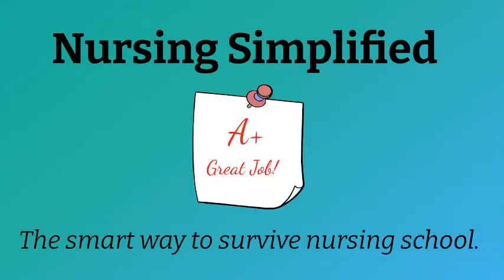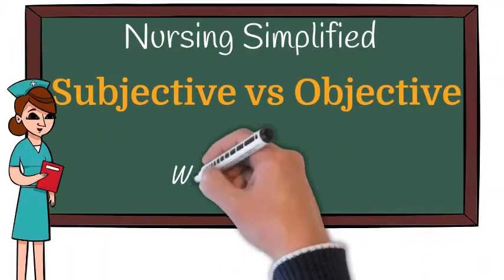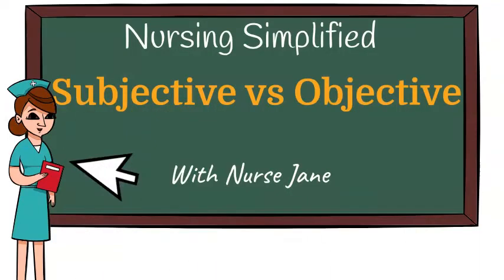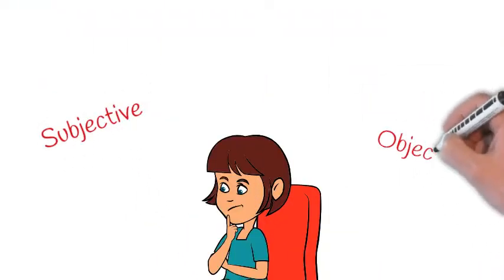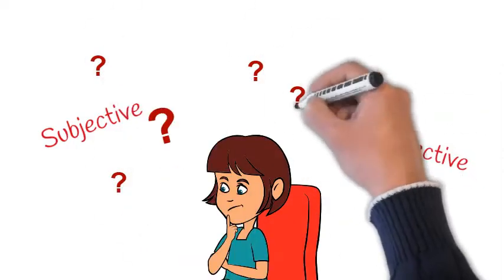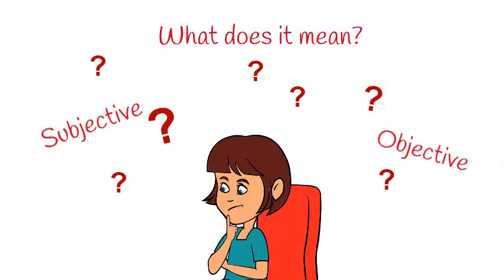Welcome to Nursing Simplified, the smart way to survive nursing school. Here at Nursing Simplified, we like to break down topics in a simple and easy-to-remember format. In today's episode, we're talking about the difference between subjective and objective data. Do you get confused about the difference between subjective and objective data? What's the difference between a sign and a symptom? Well, in today's video, we're going to clear this up once and for all.